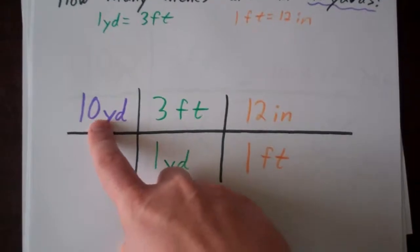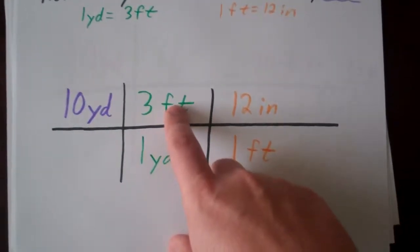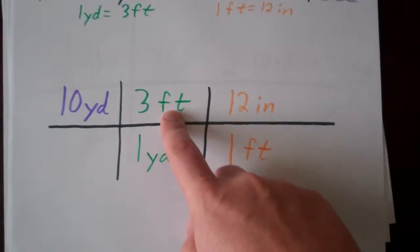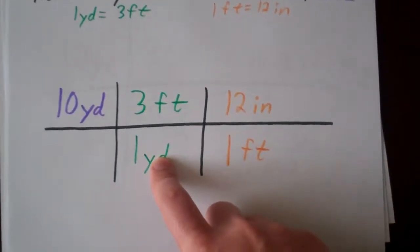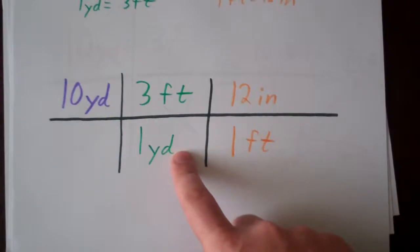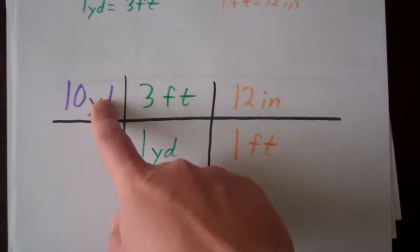Our original unit is 10 yards, and our first conversion rate is 3 feet to 1 yard. Remember, we have yards in the numerator, so now we need yards in the denominator so that those will divide out.